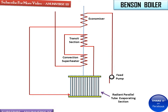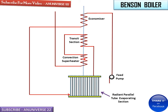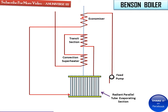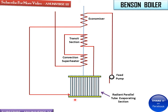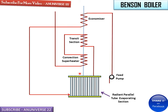Here we can see the radiant evaporator, the convection superheater, the transit section, and the economizer. These are arranged in the path of the flue gases. At the bottom is the combustion chamber, and the flue gases pass through the radiant parallel tubes, then the convection superheater, then the transit section, and then the economizer. The blue dotted line shows the path of the flue gases from bottom to top.